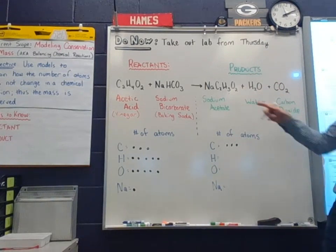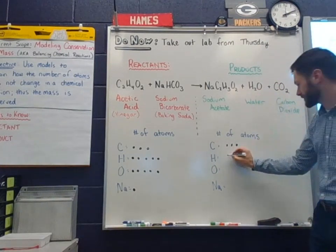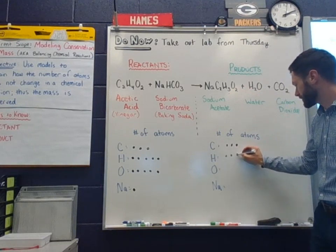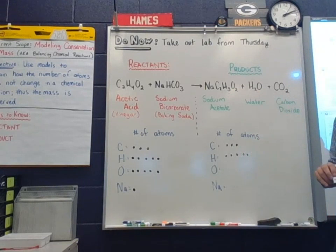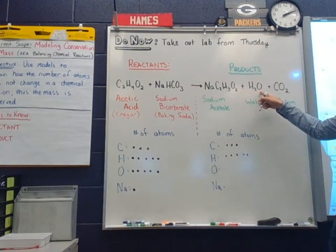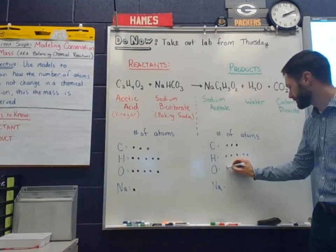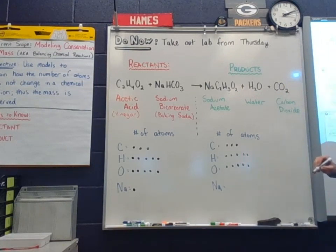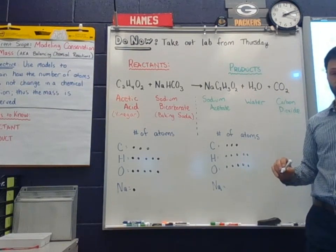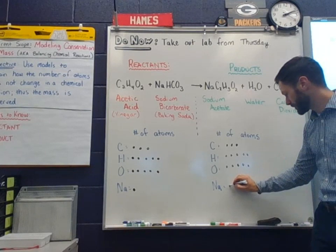Jake? Five. Yep. So we got three here, two here. So five, one, two, three, four, five. Good. Oxygen. Maddie? We got two plus one here, three plus two here, five. Okay. And how about sodium? One.